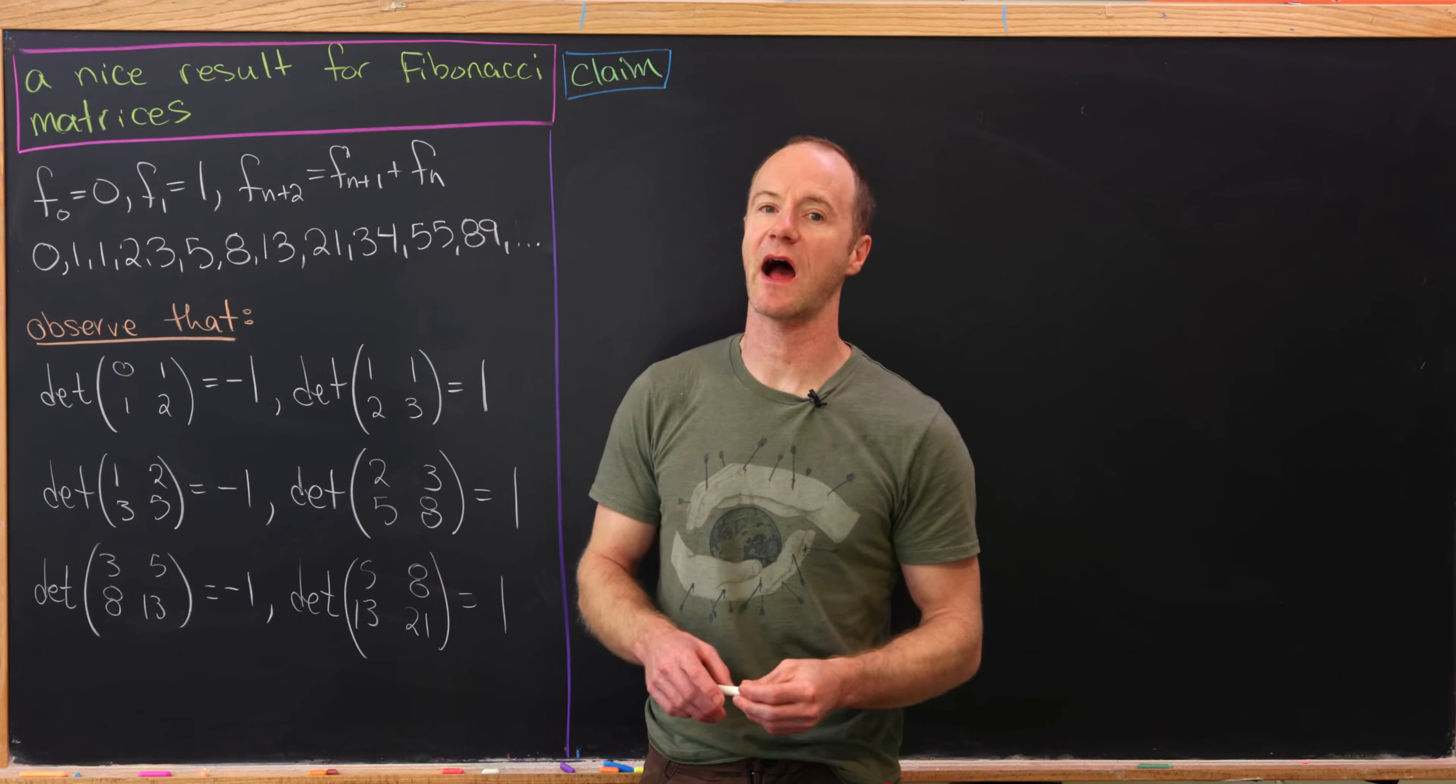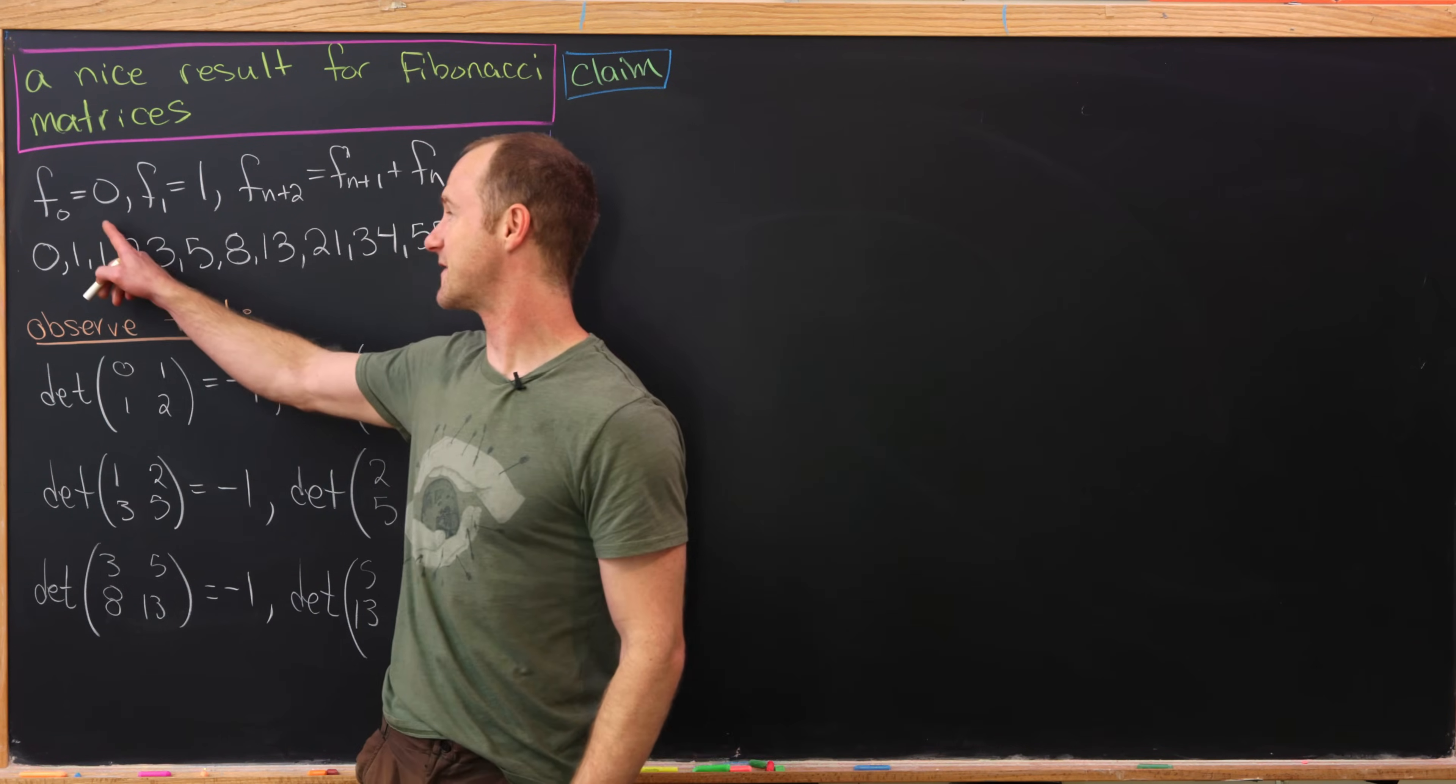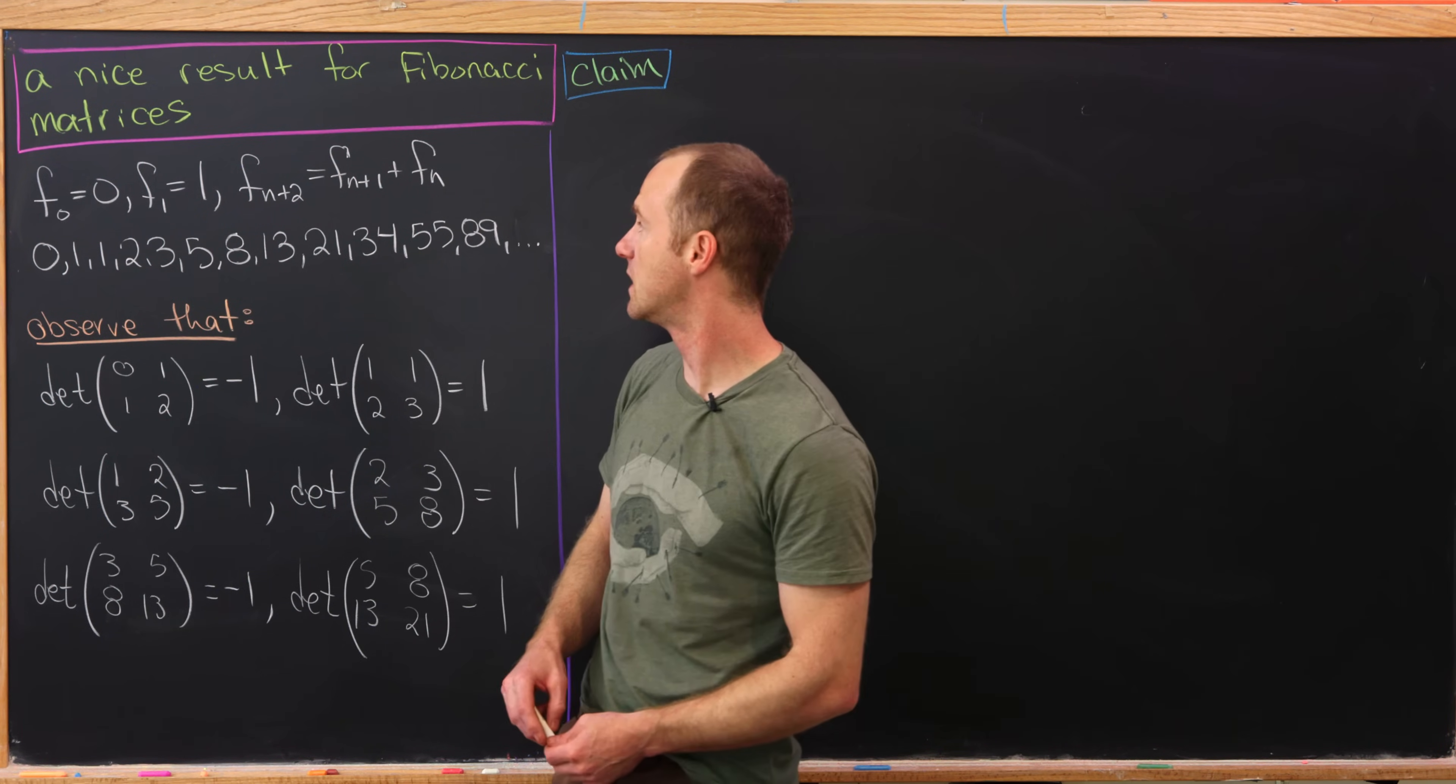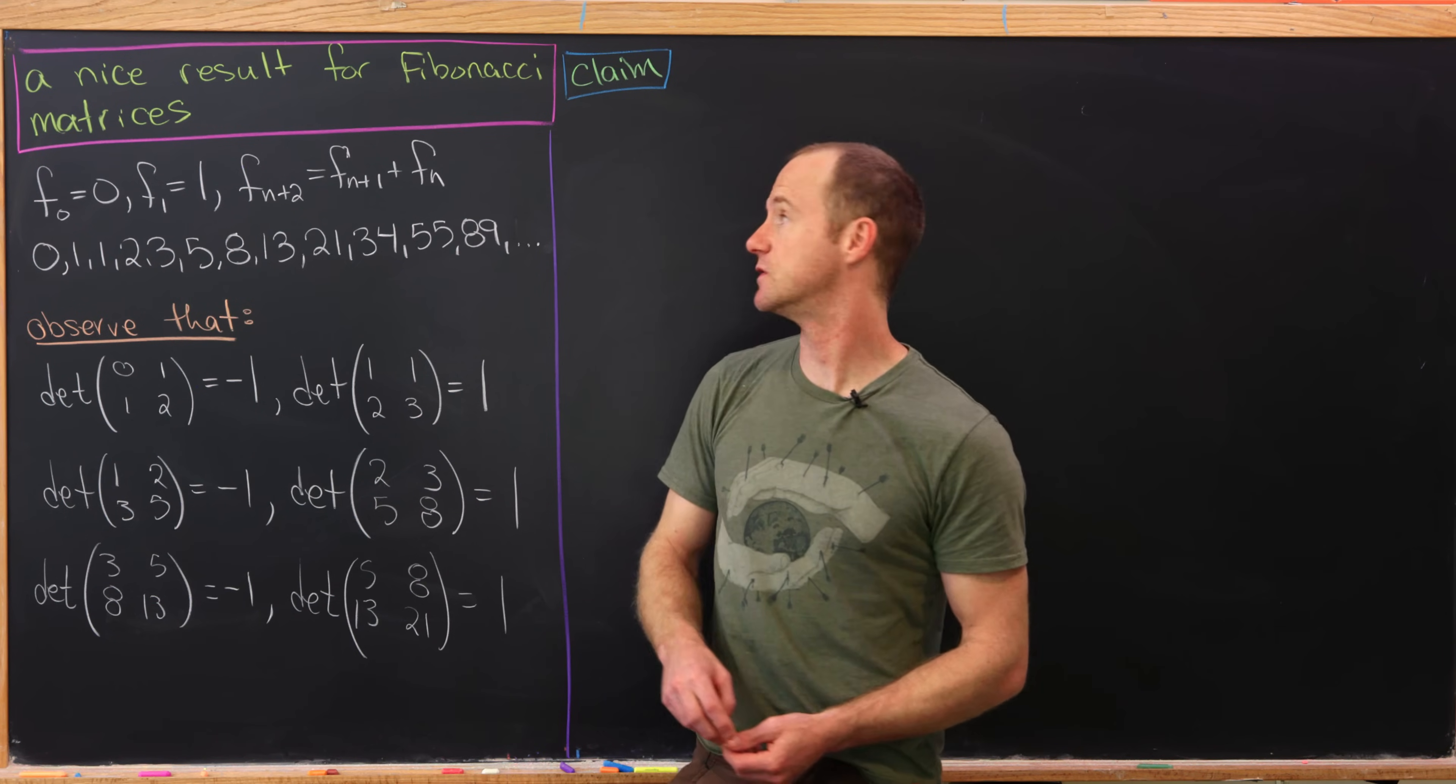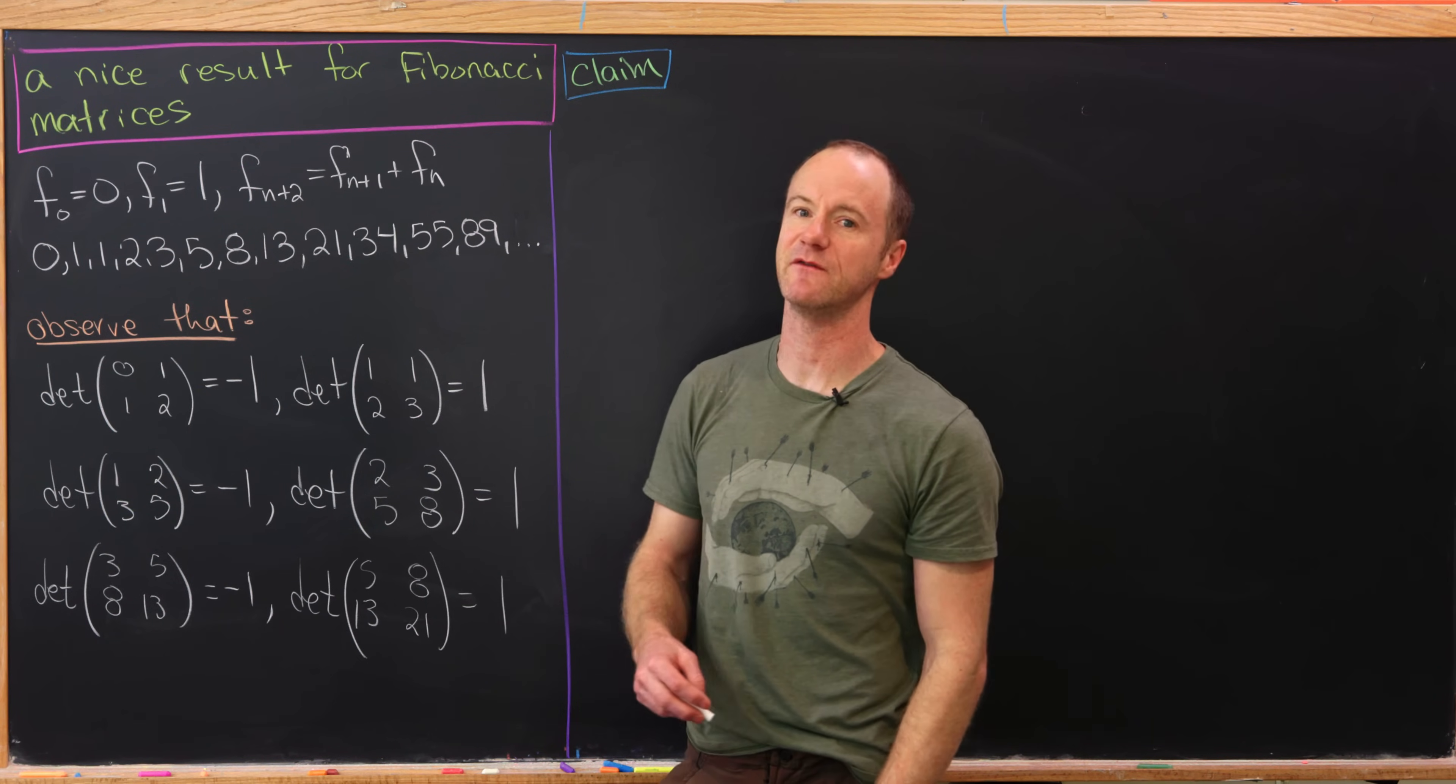Okay, so let's first recall how the Fibonacci sequence is defined. We'll take the seeds f0 to be 0 and f1 to be 1, and then we'll define the next numbers by the following two-step recursion: fn+2 equals fn+1 plus fn. So that should probably be familiar.